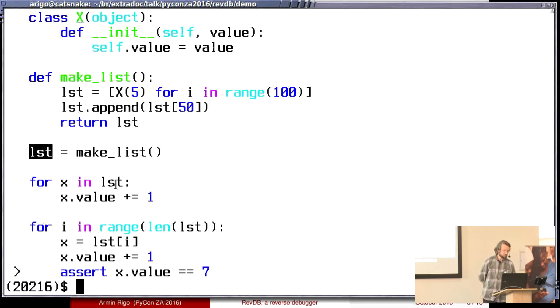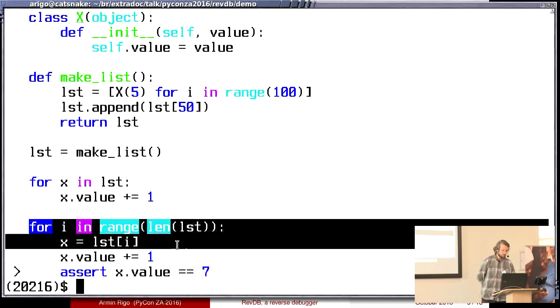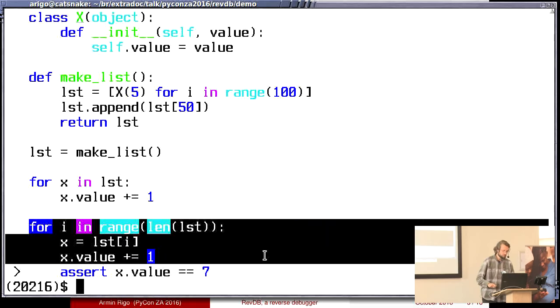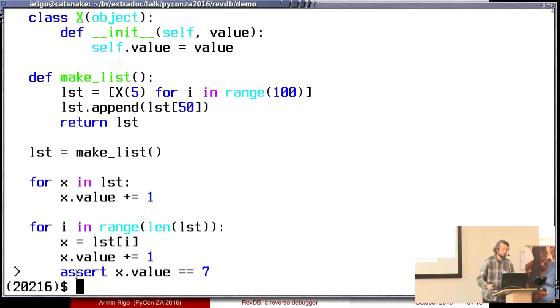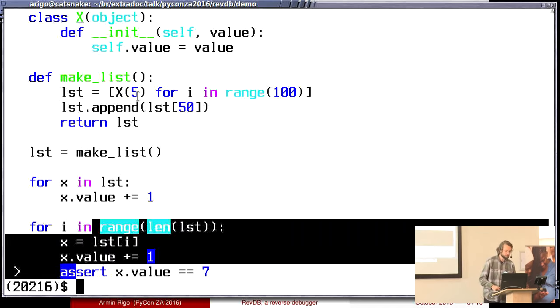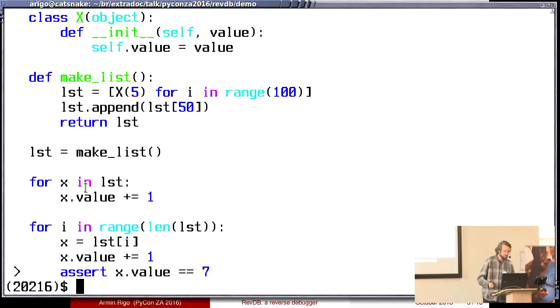I get my list of 100 of them. I add one to all values. And then I iterate again. I add one again. And then if I started with 5, then here it becomes 6. Here it becomes 7. So obviously the assert that it is 7 should work. Right?